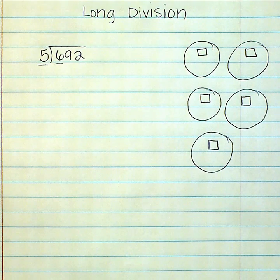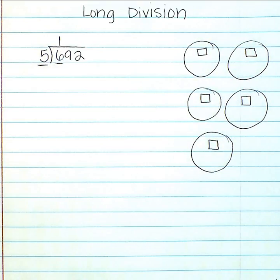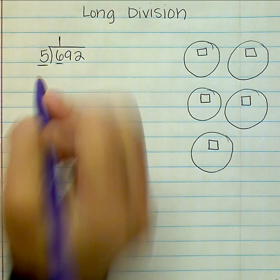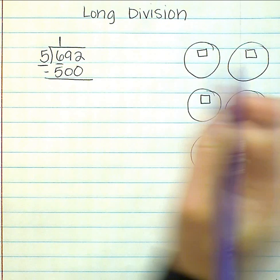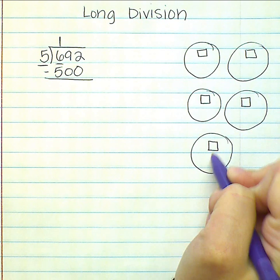I put one hundred in each group and I used five hundred altogether, because each one of these represents one hundred.